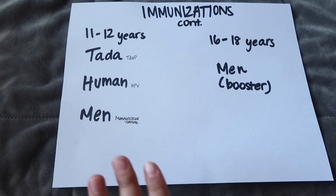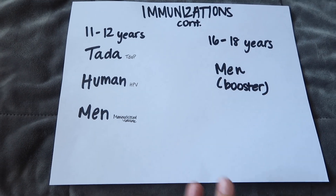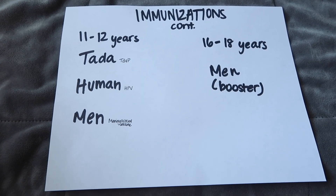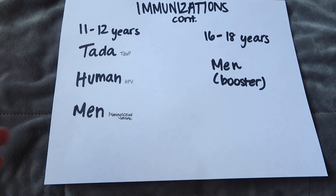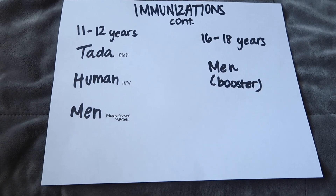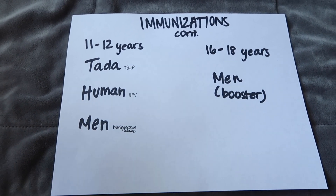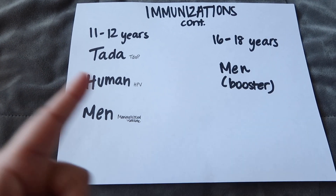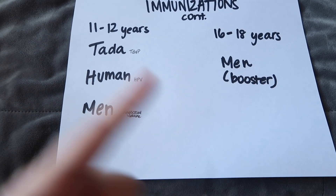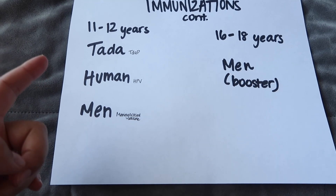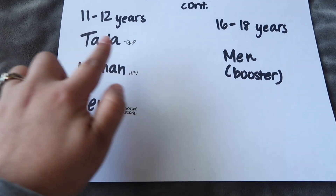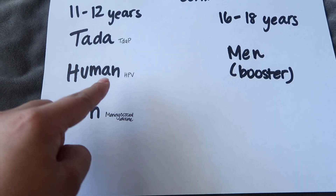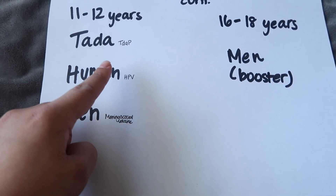There aren't too many vaccines as you get older — a lot of them are booster shots. Like in nursing school, we had to get Hepatitis B and a booster of MMR and all that. It kind of slows down, but you do have a couple of vaccines at 11 to 12 years and at 16 to 18 years. At 11 to 12 years, you have Tdap — and keep in mind, this is different than DTaP; this is Tdap.